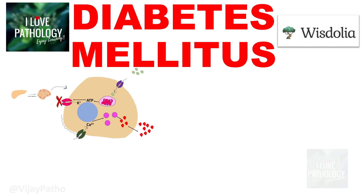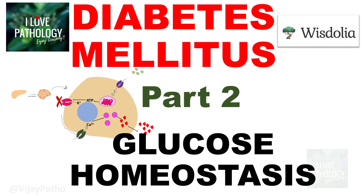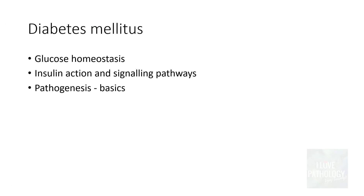In continuation with this series on diabetes mellitus, this is Part 2 where I will be discussing glucose homeostasis. In my earlier session, I had talked about the general concepts of endocrine pancreas, the different cells of pancreas, the diagnostic criteria for diabetes mellitus, and the classification of diabetes. In this part, we will understand glucose homeostasis, insulin action and its signaling pathways, and the basics of pathogenesis of diabetes mellitus.